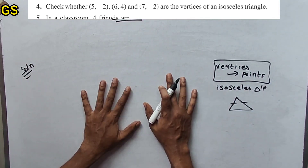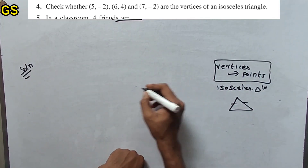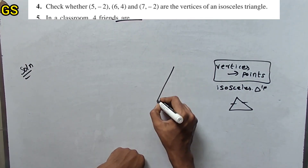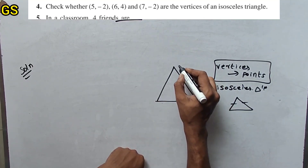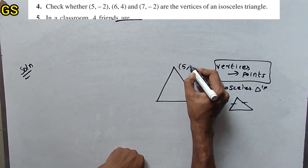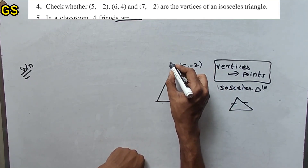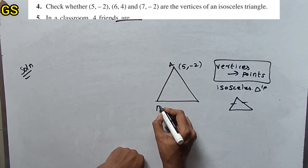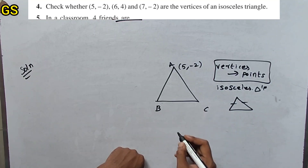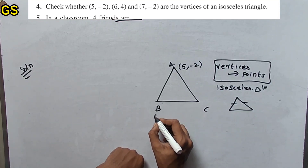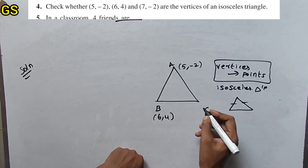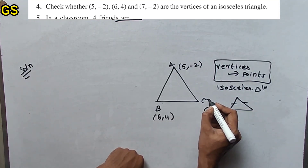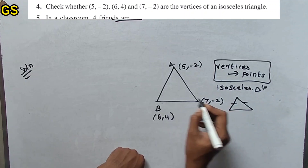We have 3 points to plot. Point A is (5, -2), point B is (6, 4), and point C is (7, -2).